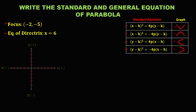From the given, for the focus, we have x and y coordinates: x is negative 2 and y is negative 5. We plot and connect these, and this is now the point of the focus.